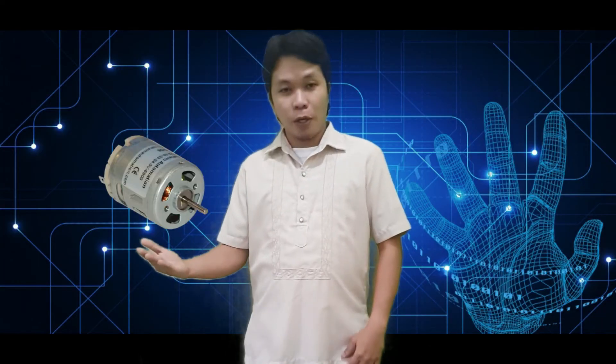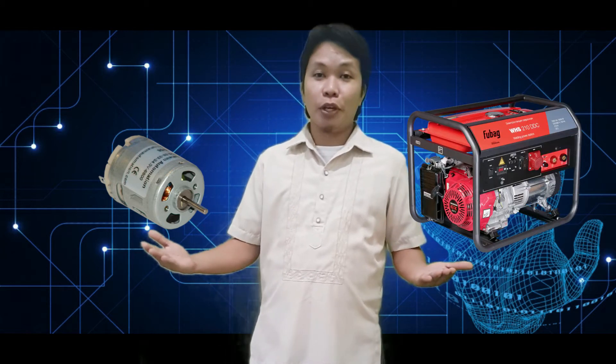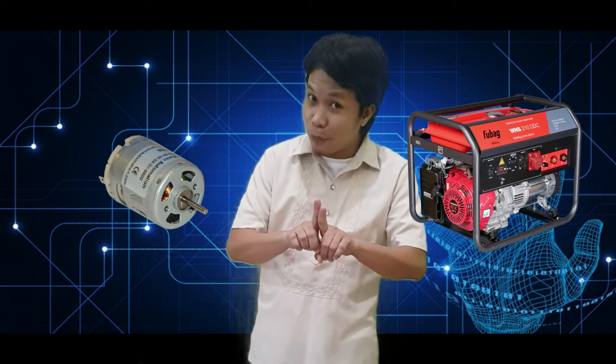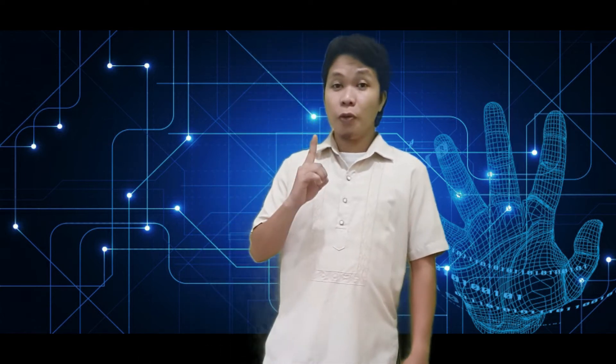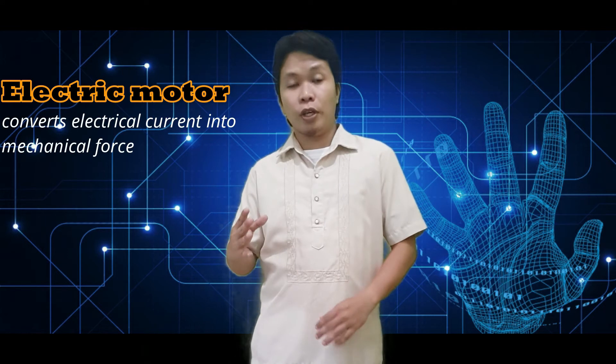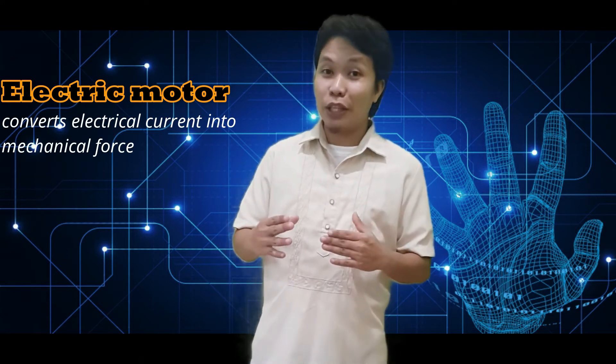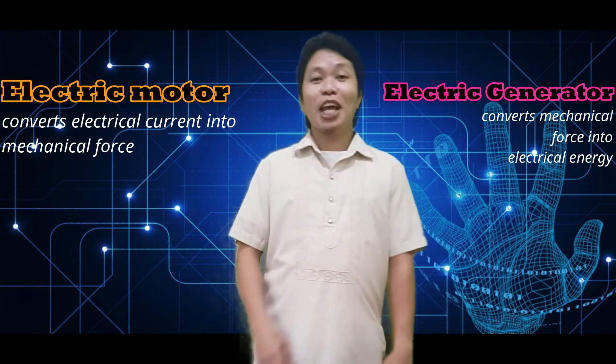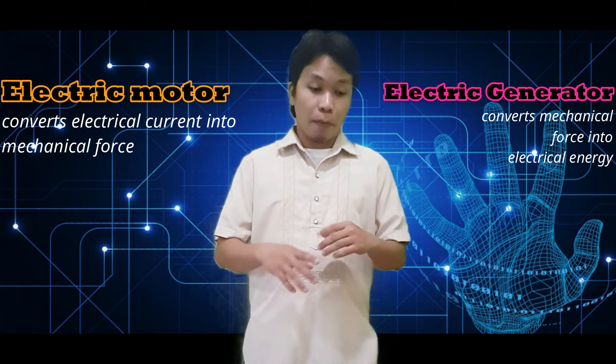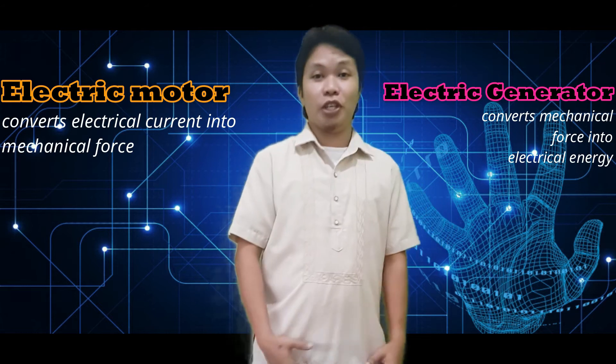So the electric motor and the electric generator are related closely with each other, just like two sides of a coin. In general, electric motor converts electrical current into mechanical force, while on the other hand, electric generator converts mechanical force into electrical energy.